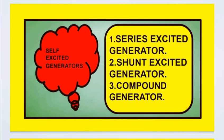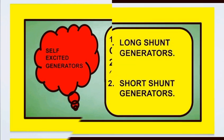Self-excited generators are further divided into three types depending upon their construction, that means the field winding connection. Those are: series excited generator, shunt excited generator, and compound excited generator.